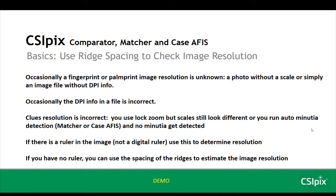Occasionally, the DPI information in a file will be incorrect. This is less obvious. Some clues that resolution is incorrect: if you have two images open and you use LockZoom, the scales still look different. If you run auto minutiae detection in the matcher case APHIS and you get no minutiae detected, that's also an indication that there's a problem.